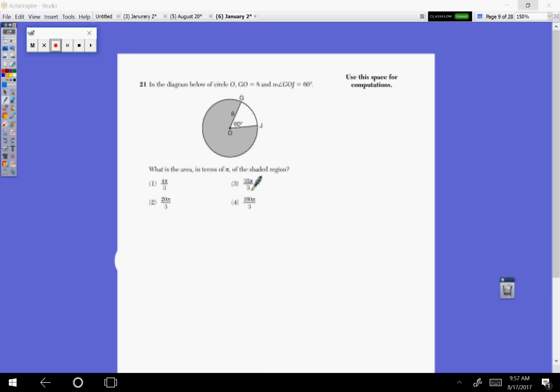Okay, so here's a sector question. We're trying to find the area in terms of pi of the shaded region.